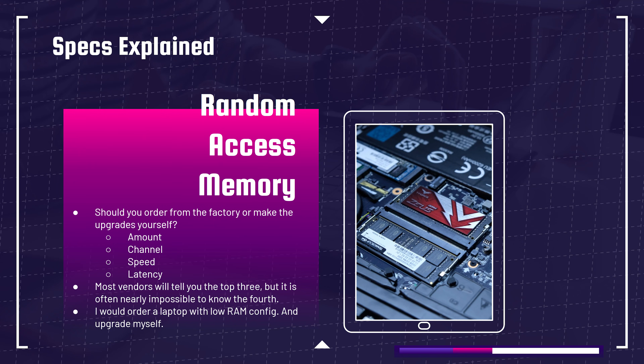How should you go about purchasing RAM? Should you have it come straight from the factory upgraded and ready to go, or should you purchase it and upgrade it yourself? Let's talk about the four aspects that make up a RAM configuration. First, the amount — so 16 versus 32. Then the channel — dual versus single, meaning two sticks or one. Most computers come with two available slots, or one slot permanently mounted with a secondary slot that can be exchanged. Do a little research and it'll tell you what the computer you're considering comes with.